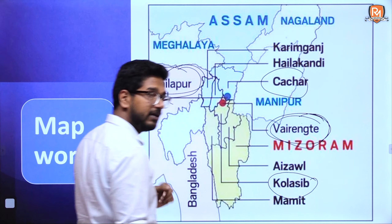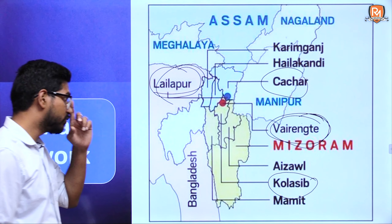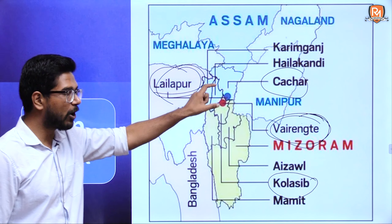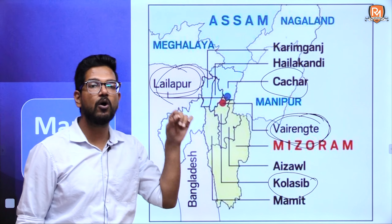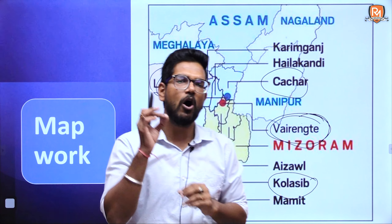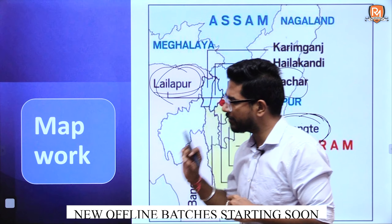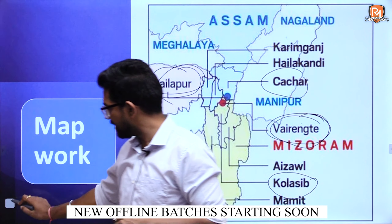If we talk about Mizoram, it is situated between Bangladesh and Myanmar, so it shares a border with Bangladesh and Myanmar internationally. Among Indian states, it shares borders with Manipur, Assam, and Tripura. This is the geographical aspect of the area. Now let's see what is the cause of this dispute, its historical background, and recent developments.